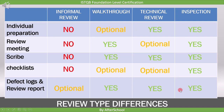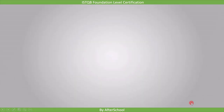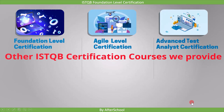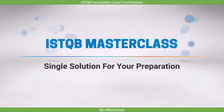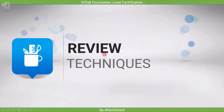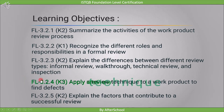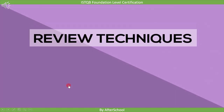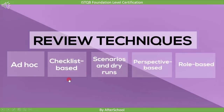After covering review activities and review types, we will now look into review techniques. This covers the fourth topic of this chapter — applying a review technique to a work product to find defects, marked as K3, meaning application-based questions will be asked. The five review techniques are: ad hoc, checklist-based, scenarios and dry runs, perspective-based, and role-based.